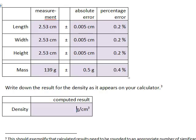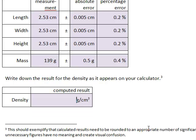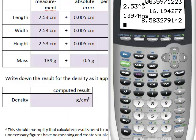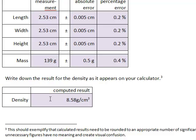With a footnote which says this should exemplify that calculated results need to be rounded to an appropriate number of significant figures because the unnecessary figures have no meaning and create visual confusion. So let's see, 8.583279142. That's what my calculator shows, total overkill, and in order to make a meaningful number out of it, it has to be truncated at some point. That's where significant figures come in, where exactly to do it, where to cut it off. Well, that's where it's helpful to look at the original data. This one is accurate to 3 significant figures, 3, 3, 3, that makes it easy to determine that the computed result needs to be 3 significant figures as well. So the result is 8.58.